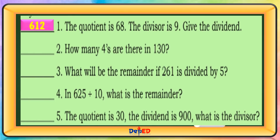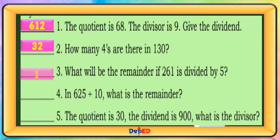How many 4s are there in 130? The answer is 32. What will be the remainder if 261 is divided by 5? The answer is 1.